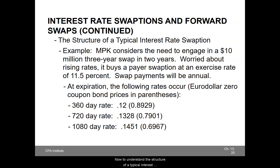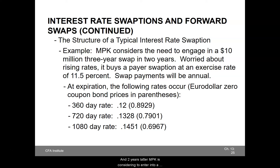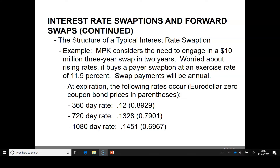To understand the structure of a typical interest rate swaption, let's consider the example of MPK, a firm. MPK considers the need to engage in a $10 million 3-year swap in 2 years' time. So the timeline is 5 years and the swaption has 2 years to expiration. And 2 years later, MPK is considering to enter into a 3-year swap. MPK worries that interest rates may rise.